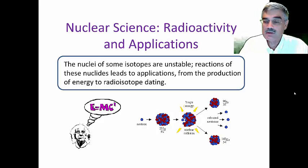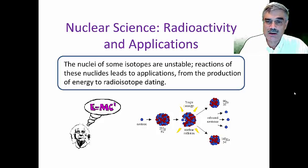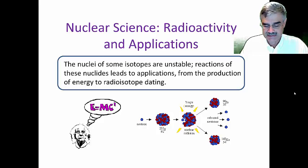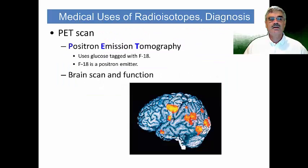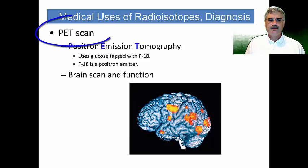Good to see you back. We're going to continue our discussions of applications of nuclear science and radioactivity. This time we'll focus more on biological systems and biomedicine. We'll begin by discussing one application called PET scans — a biological application of radioisotopes for diagnosis — what are called PET scans, positron emission tomography.